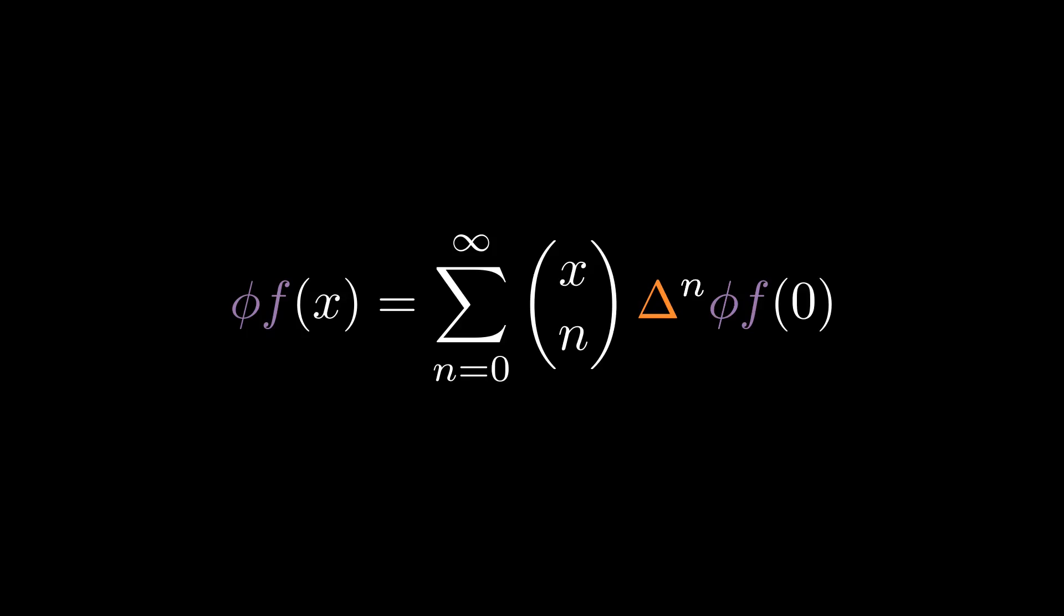And finally, this purple function, phi f, we can rename to just f. What we've just derived is the discrete version of the Maclaurin series, known as Newton's forward difference formula. And the way we did it shows that the two are actually the same thing up to isomorphism, which, I dunno, just kind of made me smile whenever I saw it.